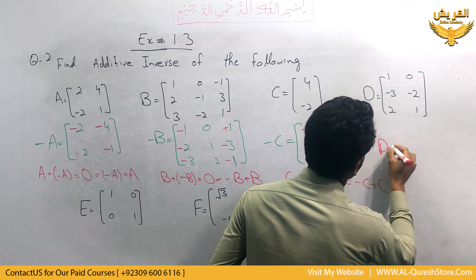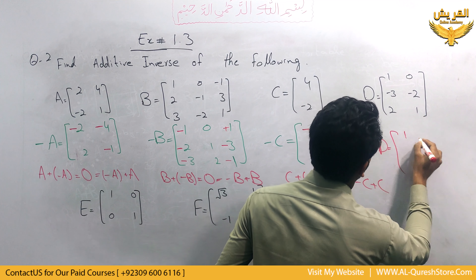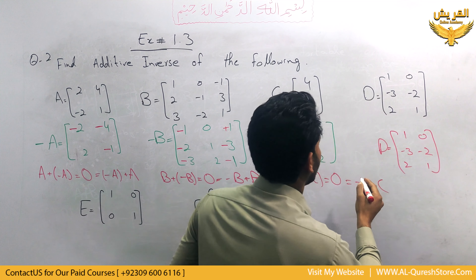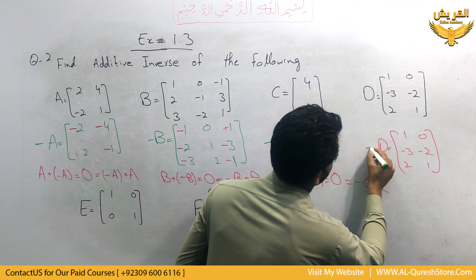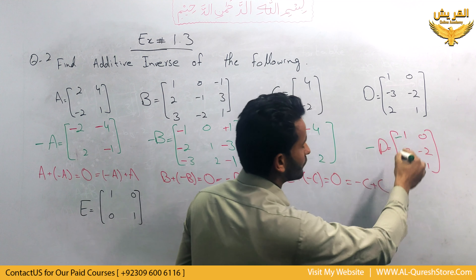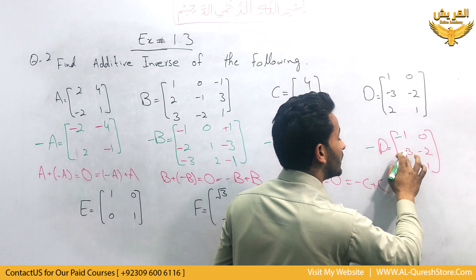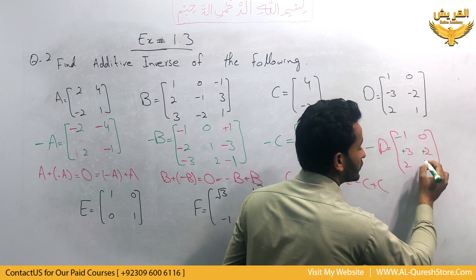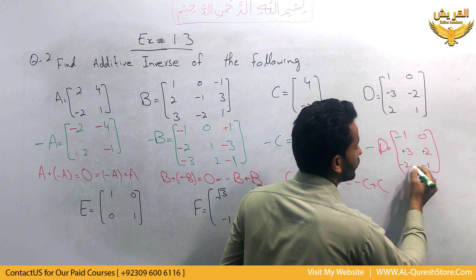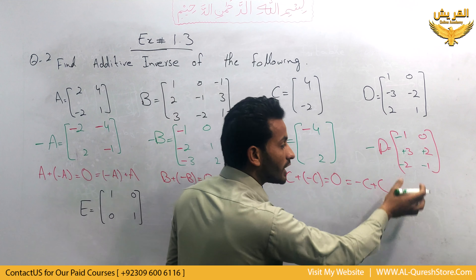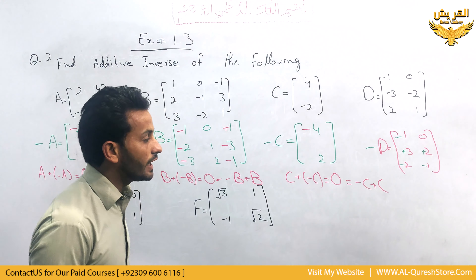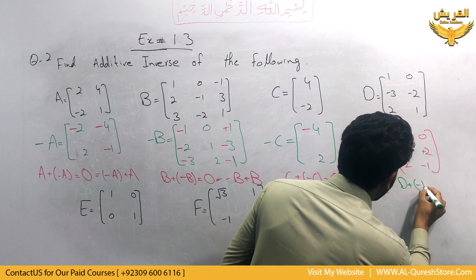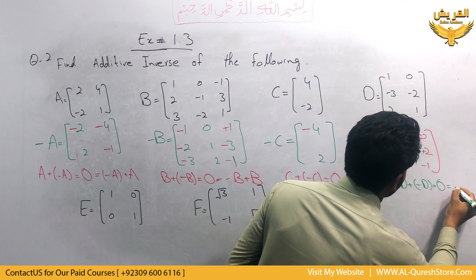For matrix d, d equals 1, 0, minus 3, minus 2, 2, and 1. We have to change the sign for minus d: plus 1 becomes minus 1, 0 remains the same, minus 3 becomes plus 3, minus 2 becomes plus 2, 2 becomes minus 2, and 1 becomes minus 1. So the signs of all elements of matrix d are changed, and minus d is the additive inverse of matrix d.